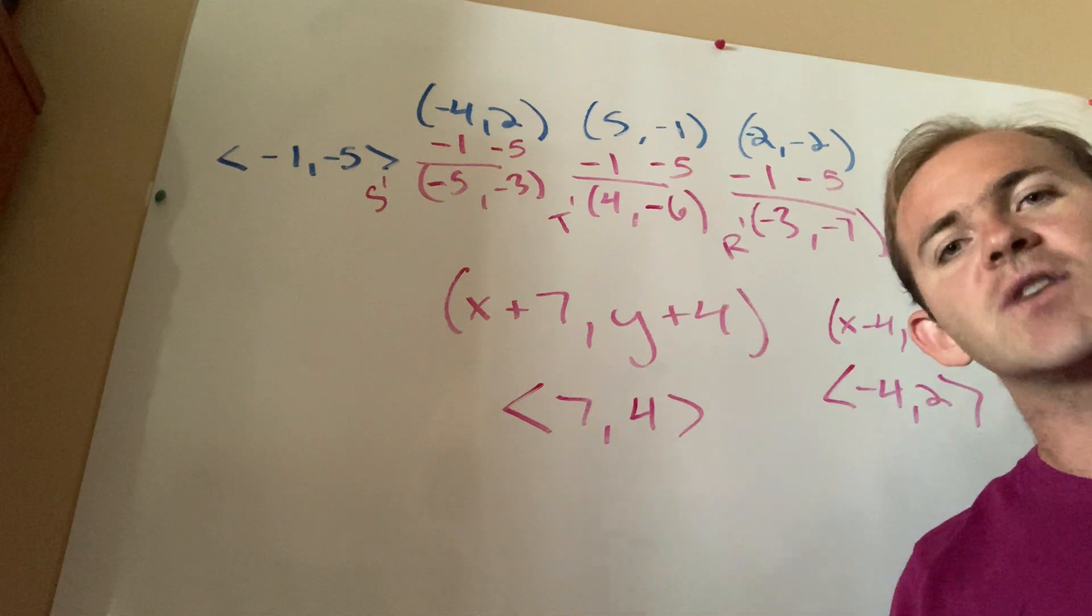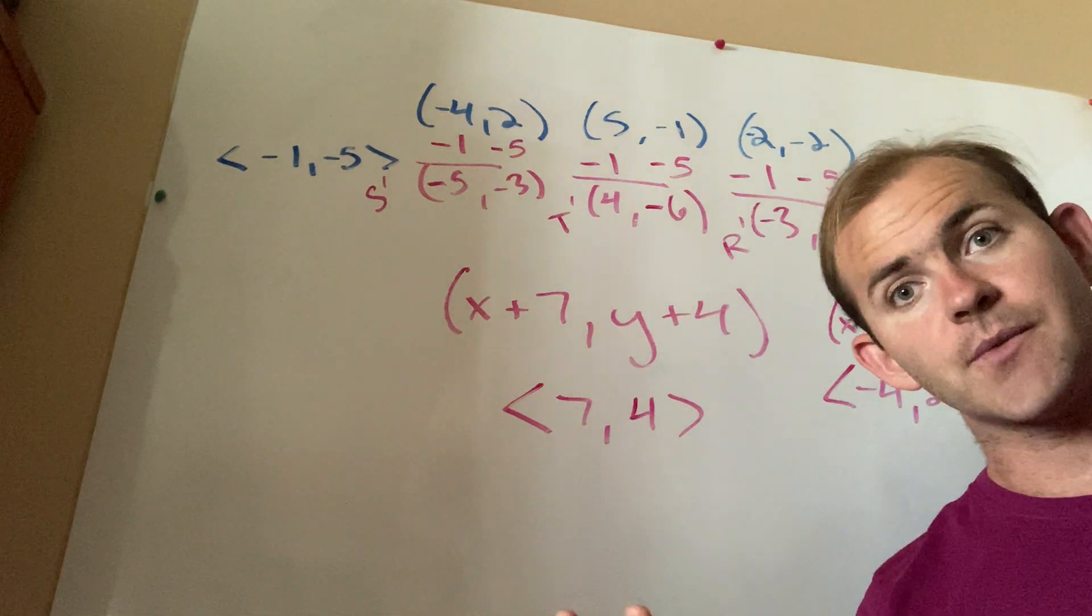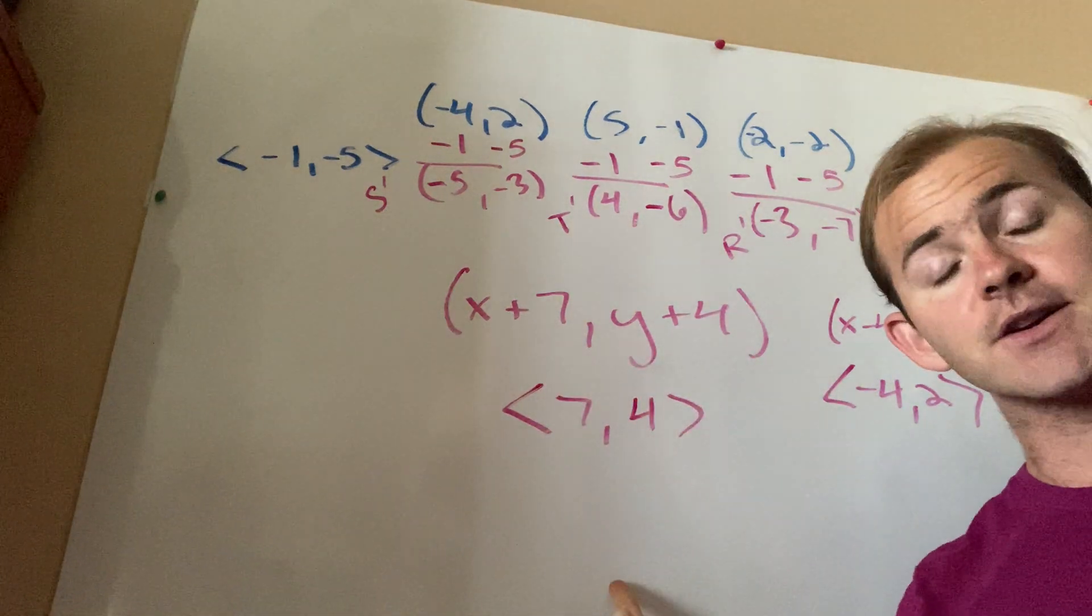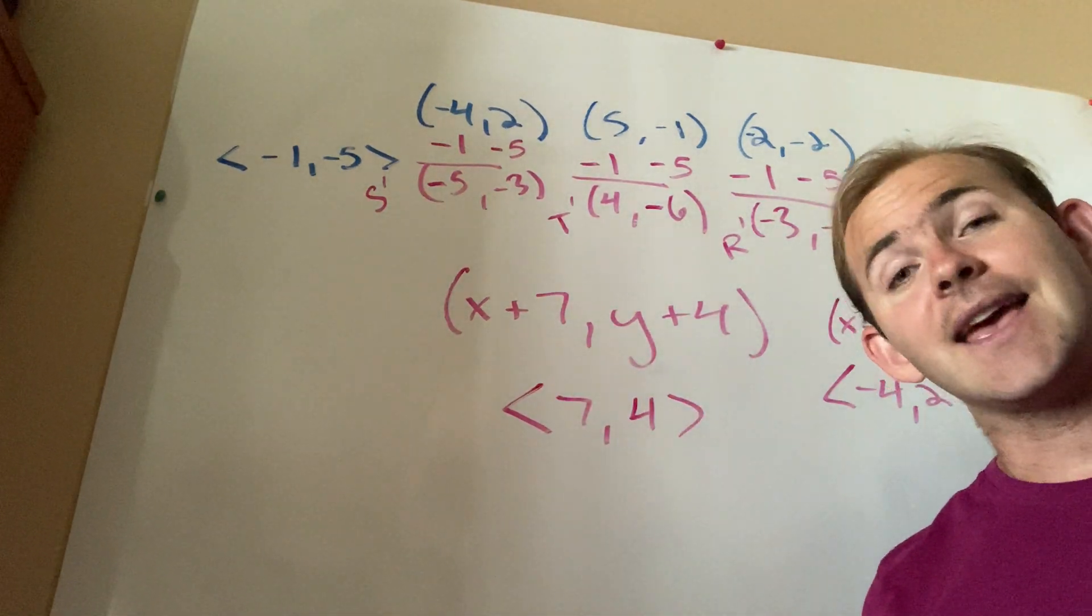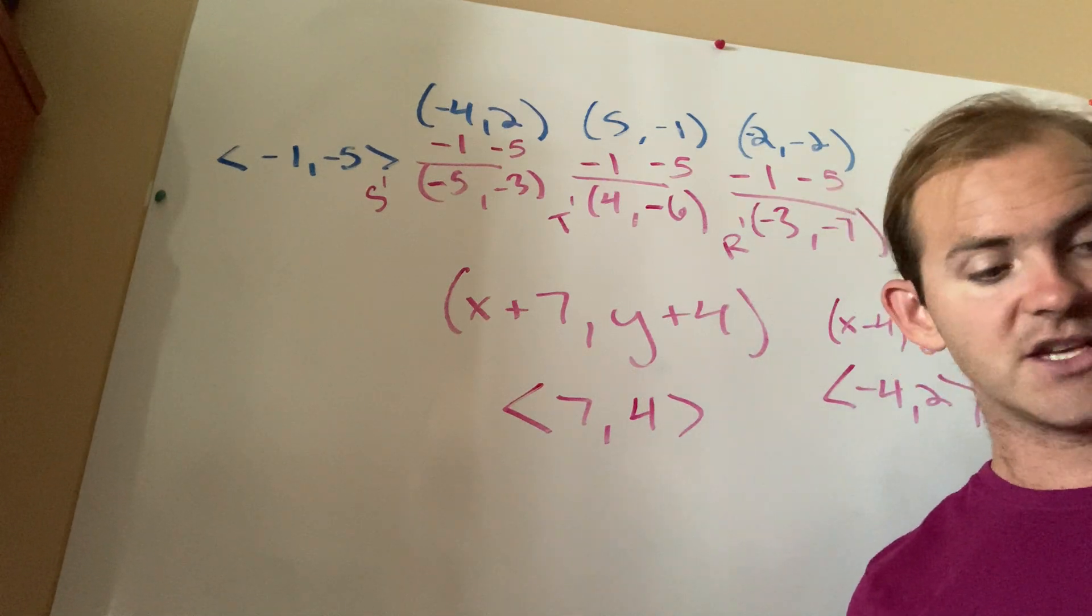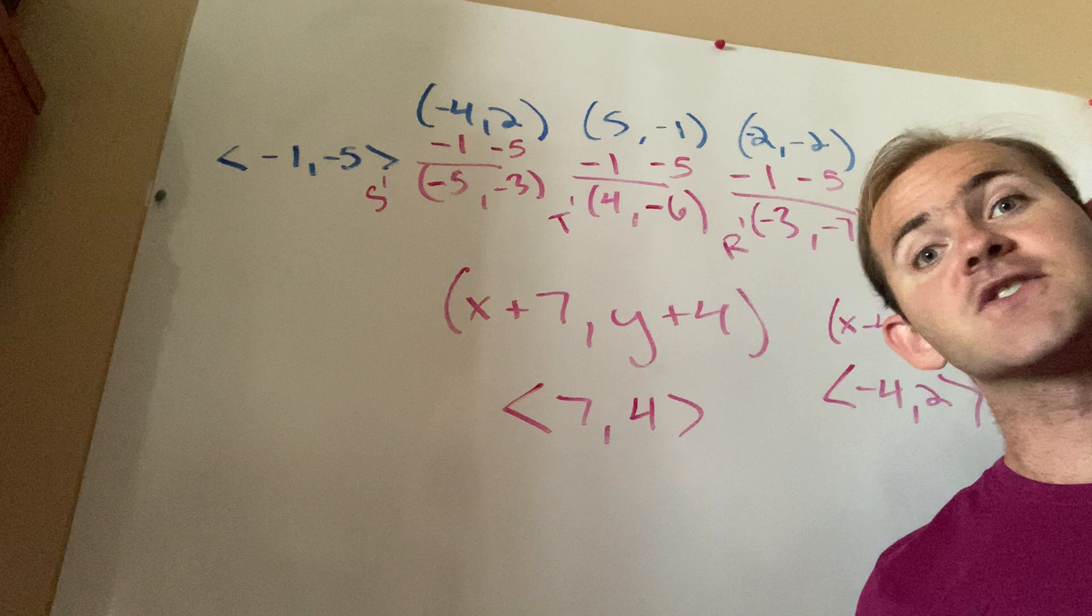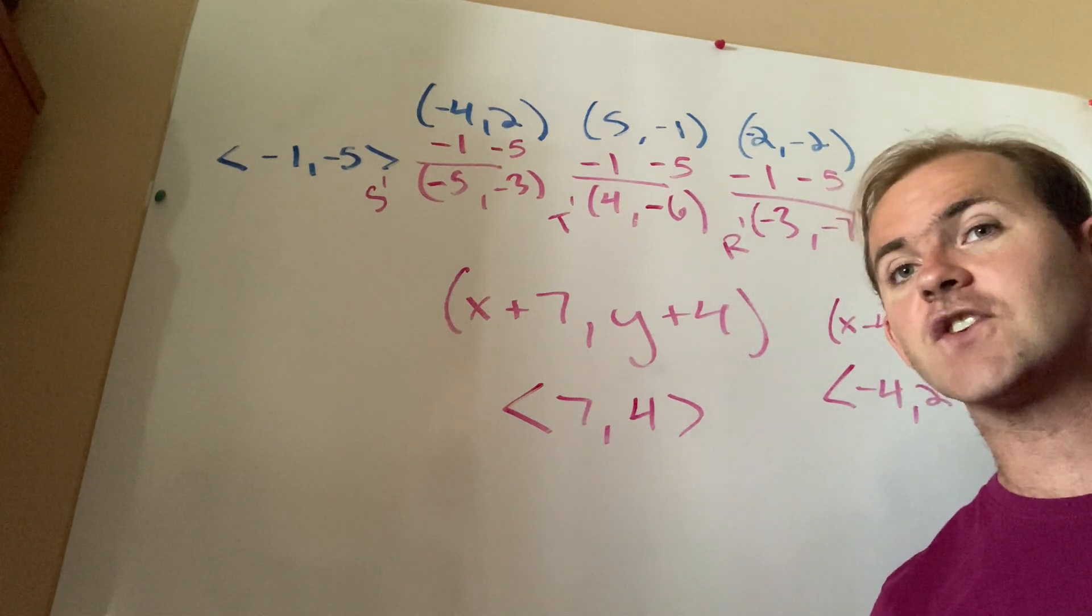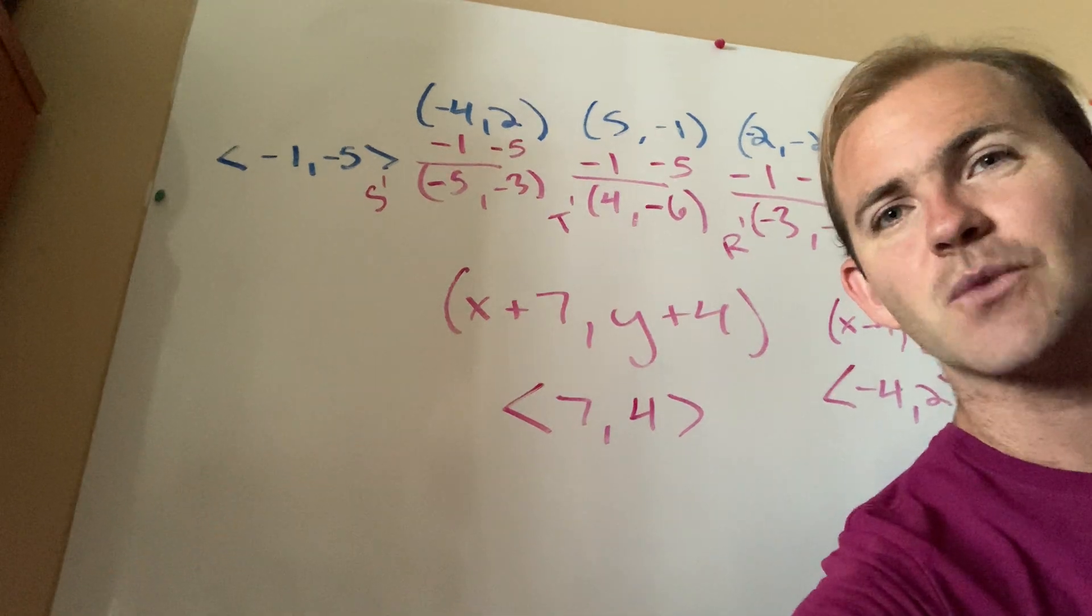So in other words, a translation can be represented two ways. It can be represented either using coordinate rules or vectors, but it doesn't change how the transformation is applied. What you end up with is a rigid motion transformation. The figure does not change in size. It stays the same size. It just changes location in the coordinate plane.